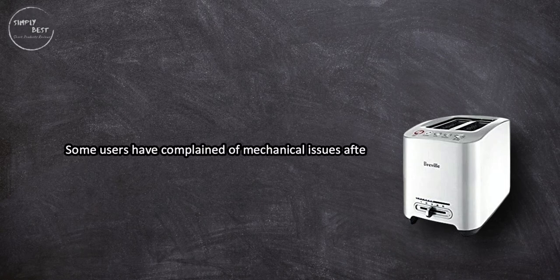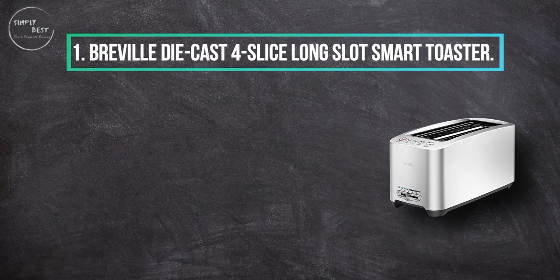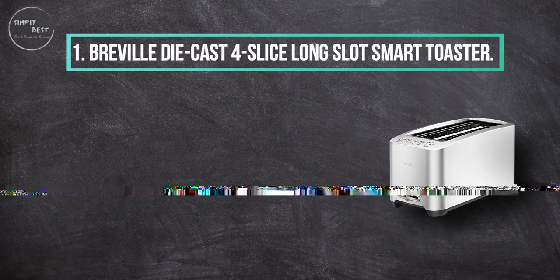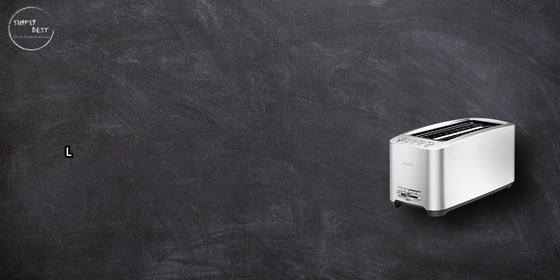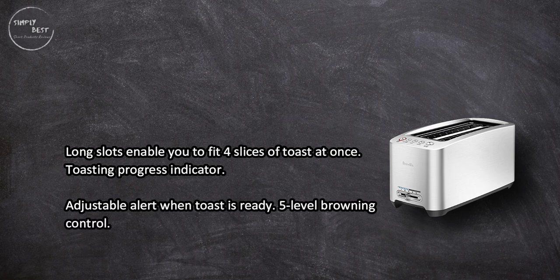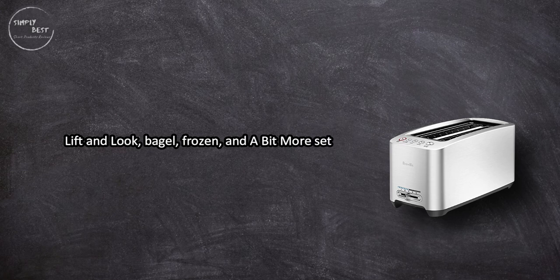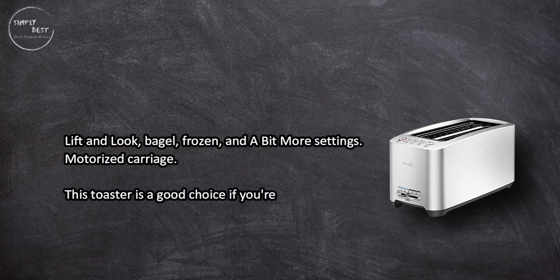At number one, Breville Die-Cast four-slice long slot smart toaster. Long slots enable you to fit four slices of toast at once, toasting progress indicator, adjustable alert when toast is ready, five-level browning control, Lift and Look, bagel, frozen, and A Bit More settings, motorized carriage.